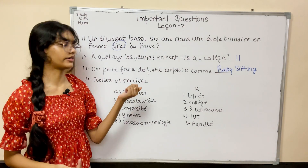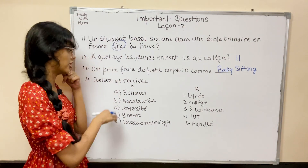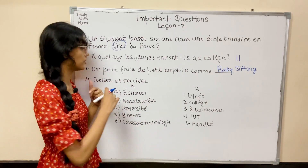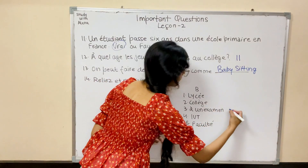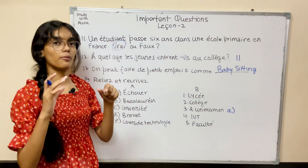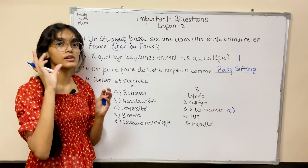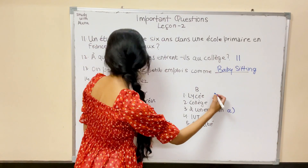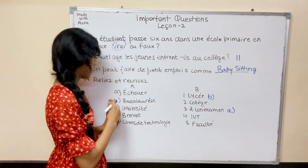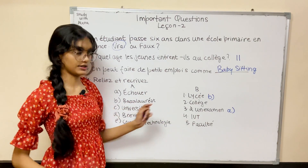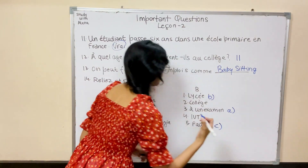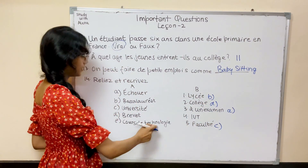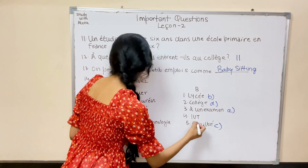Question 14: Relier et récrire — match the following and rewrite the answer. The matchings are: A — échouer un examen (to fail an exam); B — baccalauréat with lycée; C — université equals faculté, they are similar; D — brevet with collège; E — études de technologie with IUT. This is from the expressions box in your textbook.